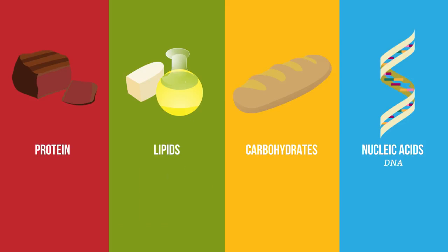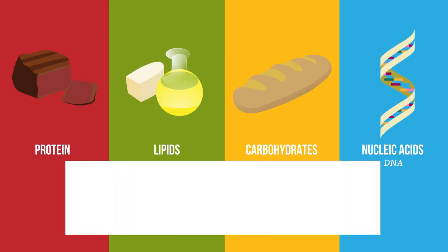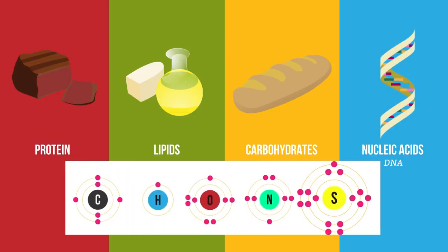Proteins are a little more complex, with four or five elements: carbon, hydrogen, oxygen, nitrogen and sometimes sulfur.